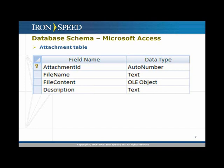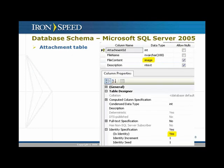There are no other image or data types available in Microsoft Access for storing large binary objects. If you're using Microsoft SQL Server — such as SQL Server 2005, 2000, or 2008 — you want to use an image data type. This allows you to upload not just images, but really any kind of binary object.